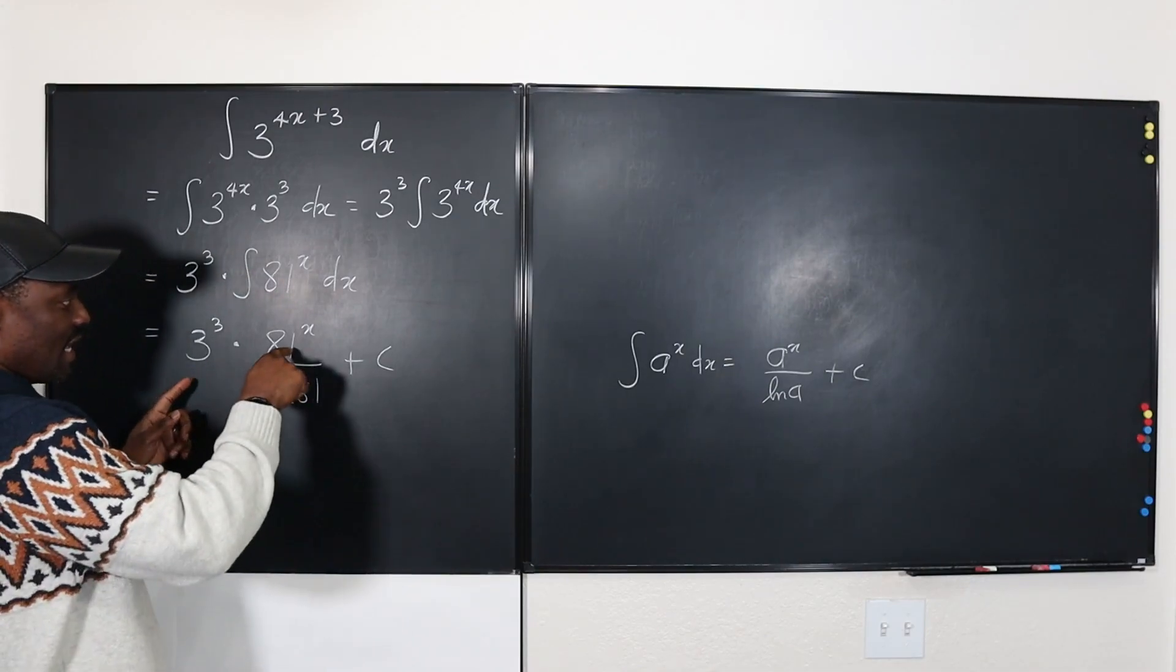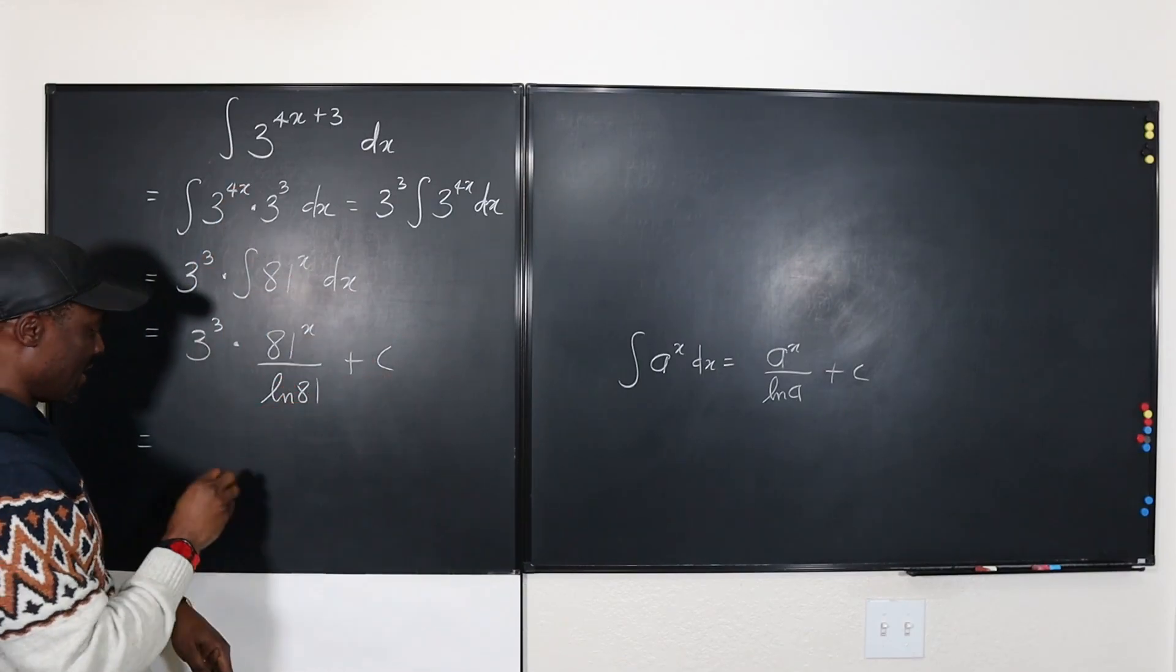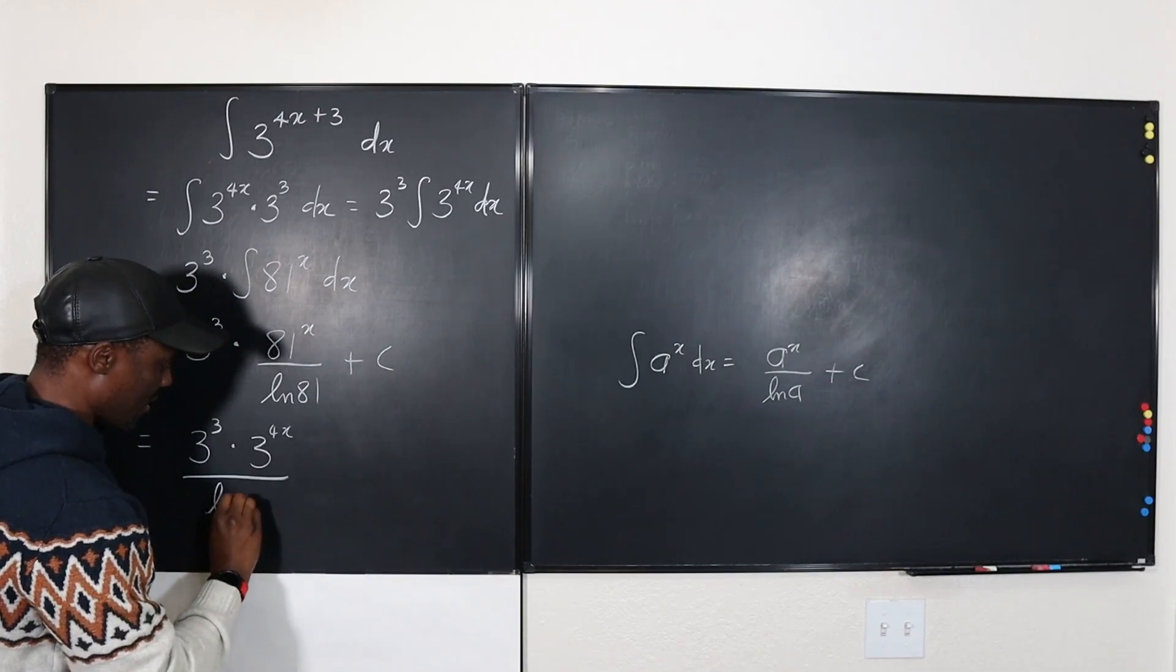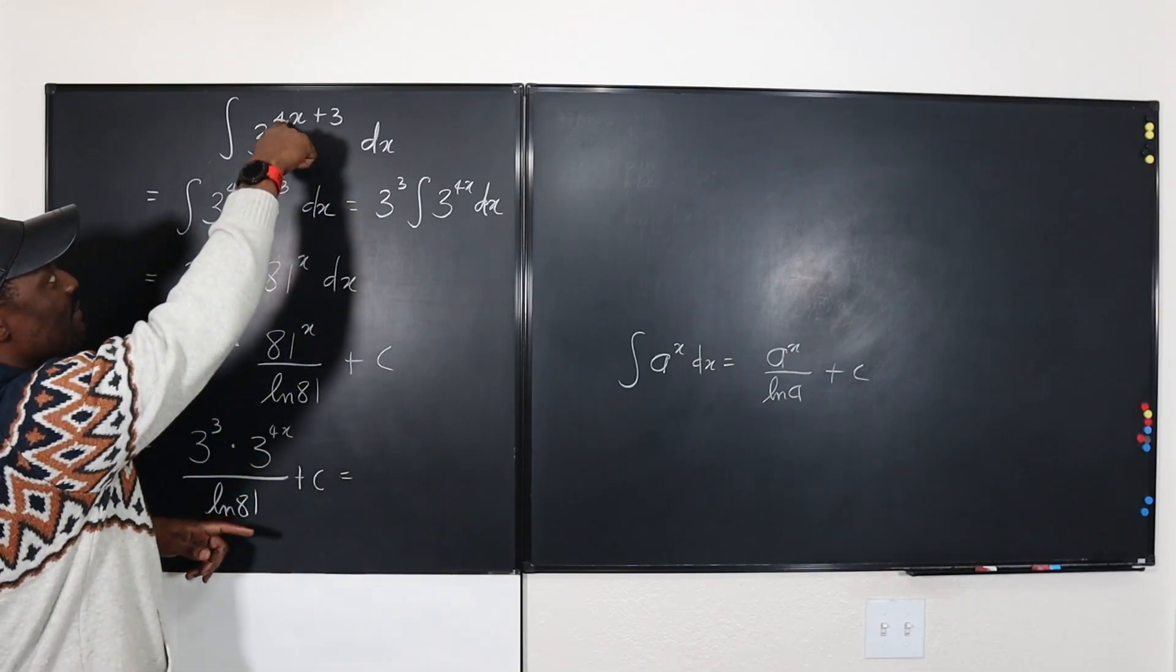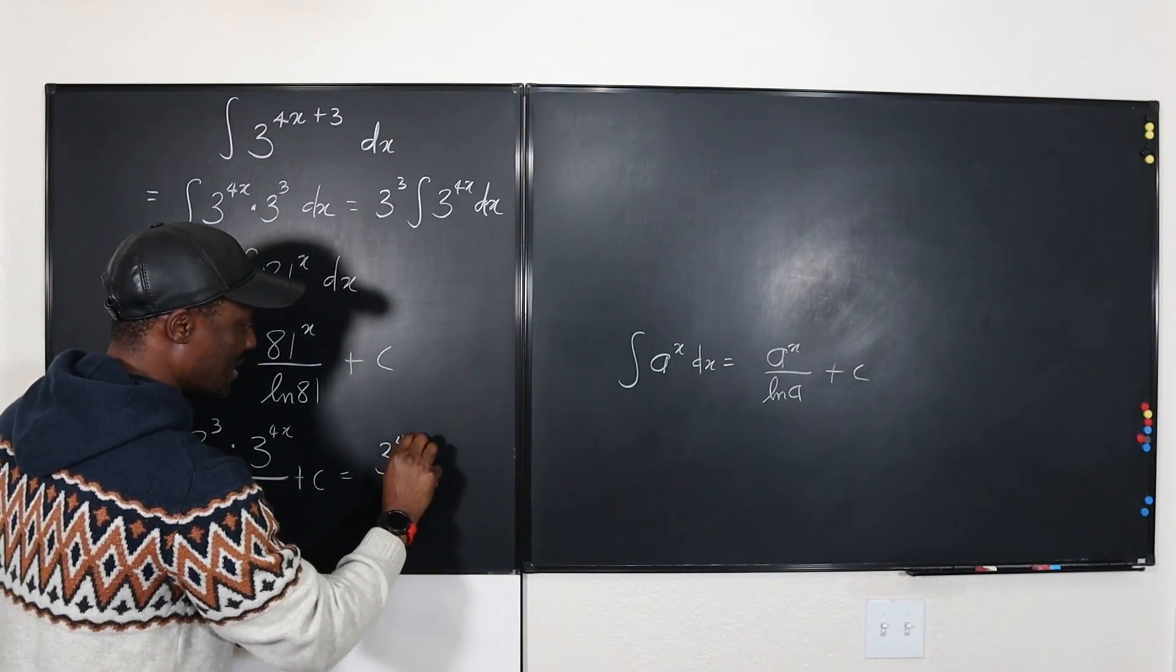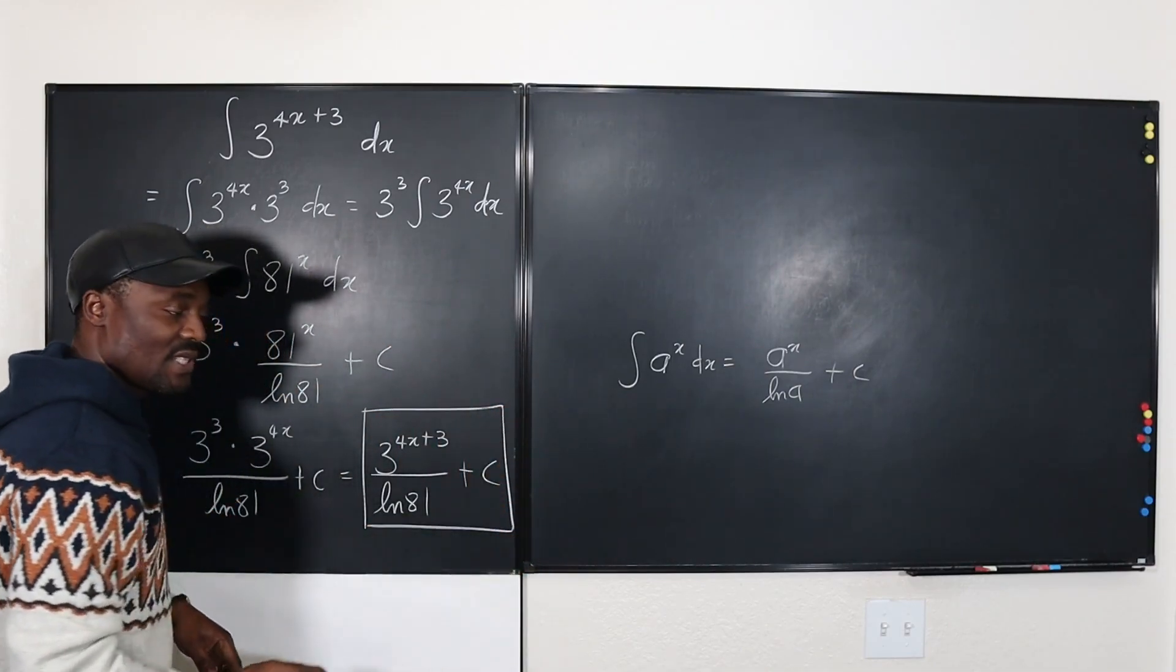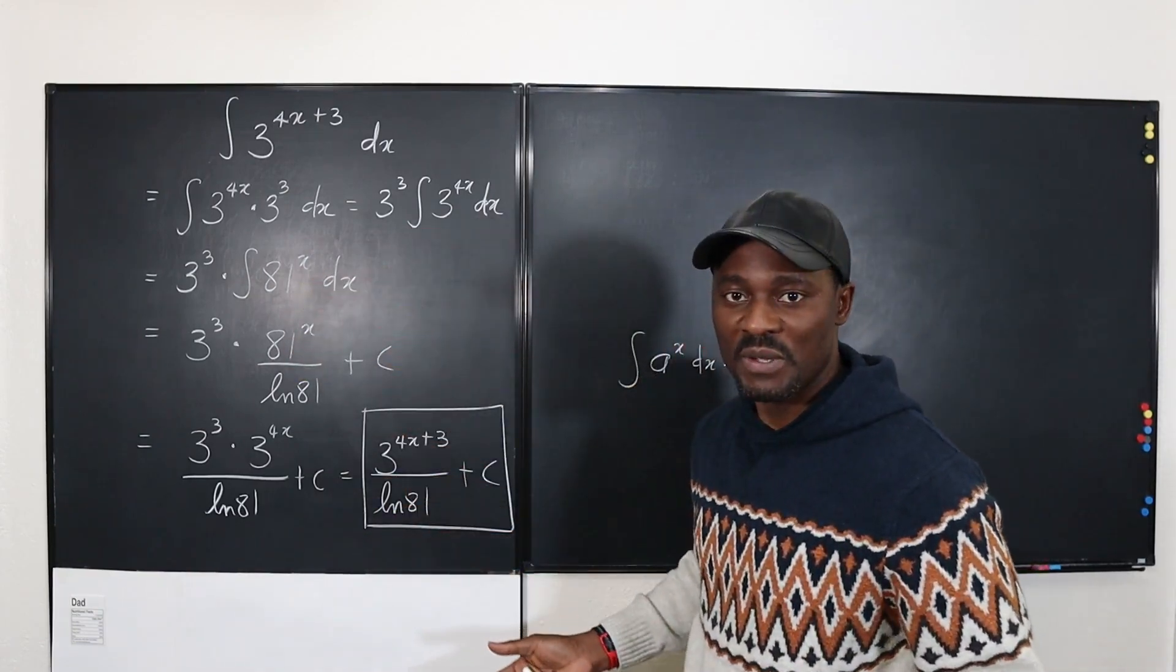So we're going to apply it. Our answer is going to be 3 to the third multiplied by 81 to the x over the natural log of 81 plus c. We can take this back to the form it was originally. This 81 to the x is 3 to the 4x, so this is the same thing as 3 to the third multiplied by 3 to the 4x divided by the natural log of 81 plus c, which we can combine to get 3 to the 4x plus 3 divided by the natural log of 81 plus c. This is the answer to this integral without using u substitution.